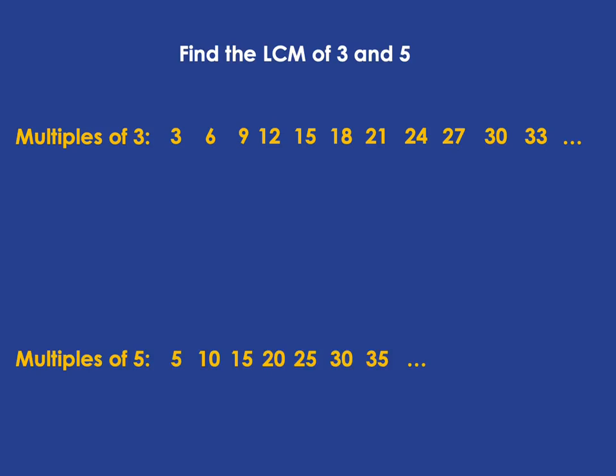Now if we're looking for common multiples — when we say in English 'I have something in common with you,' it means we share something, there's something the same. So when we talk about common multiples of three and five, it means multiples of three that are also multiples of five — a number that's in the top list, the multiples of three, that's also in the bottom list, the multiples of five. That's a common multiple. For example, 15 is a common multiple.